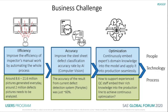The major three business challenges they are facing are: first, improve the efficiency of inspectors' manual work by automating the process; second, improve the steel sheet defect classification accuracy rate by computer vision; and most importantly, how to achieve continuous optimization — how to embed experts' domain knowledge into the model and apply it into the production line seamlessly. With all these problems in mind, we designed this visual defect detection system to connect the people, technology, and process.